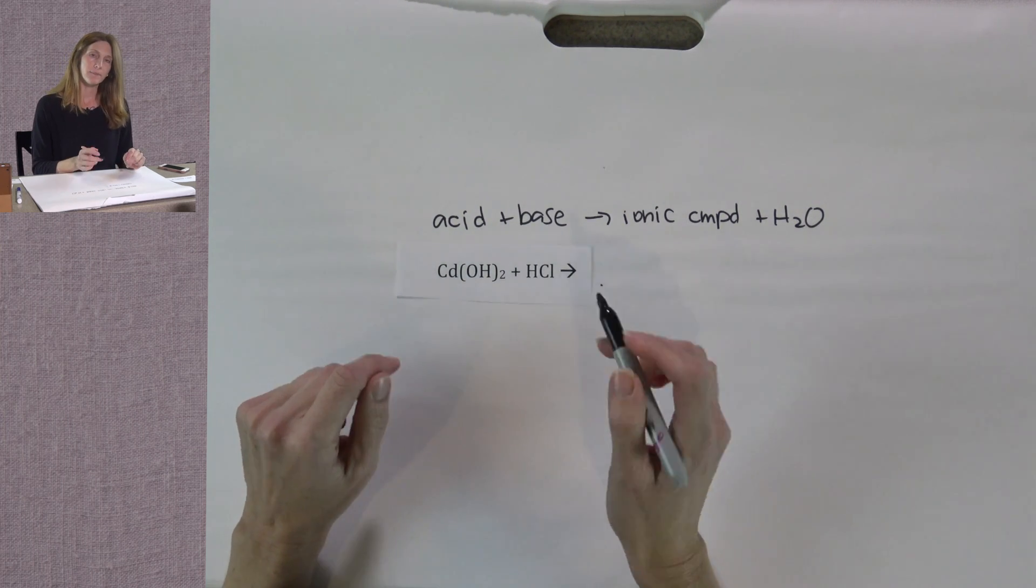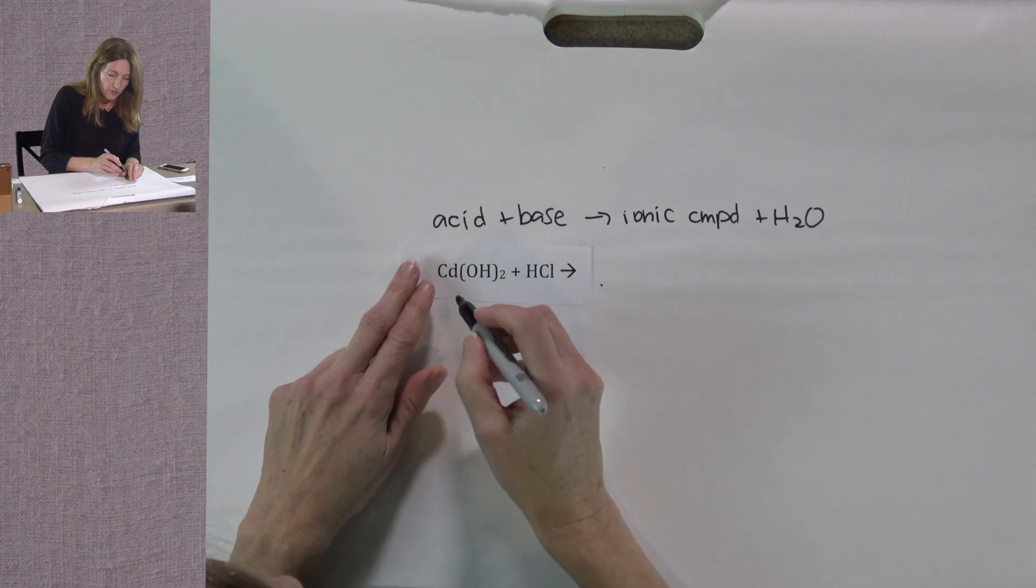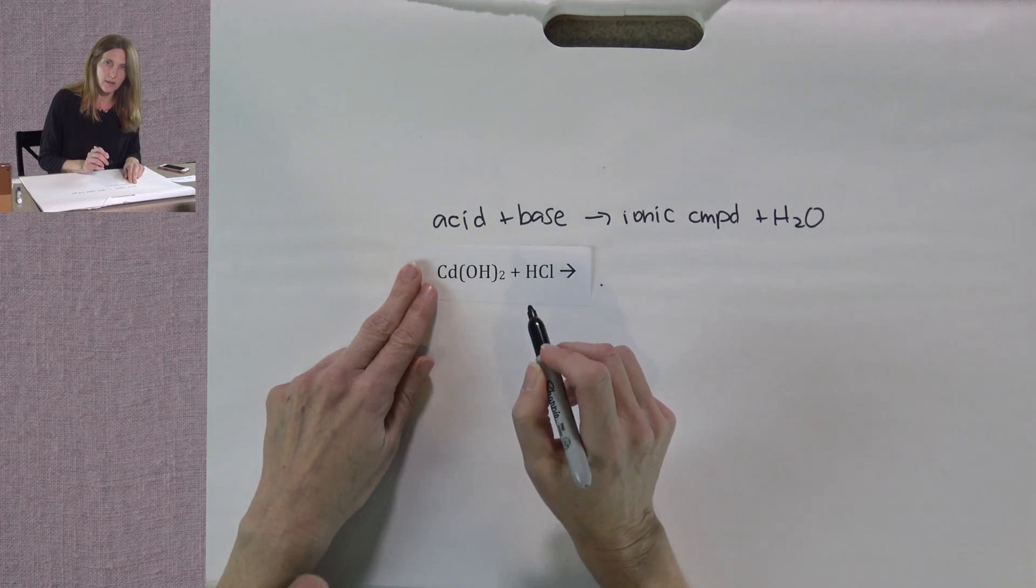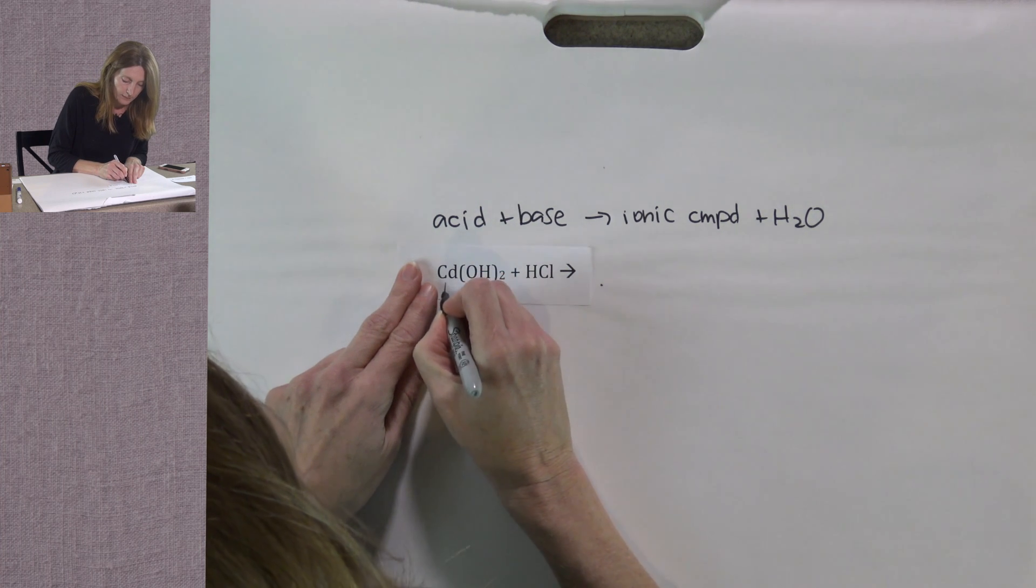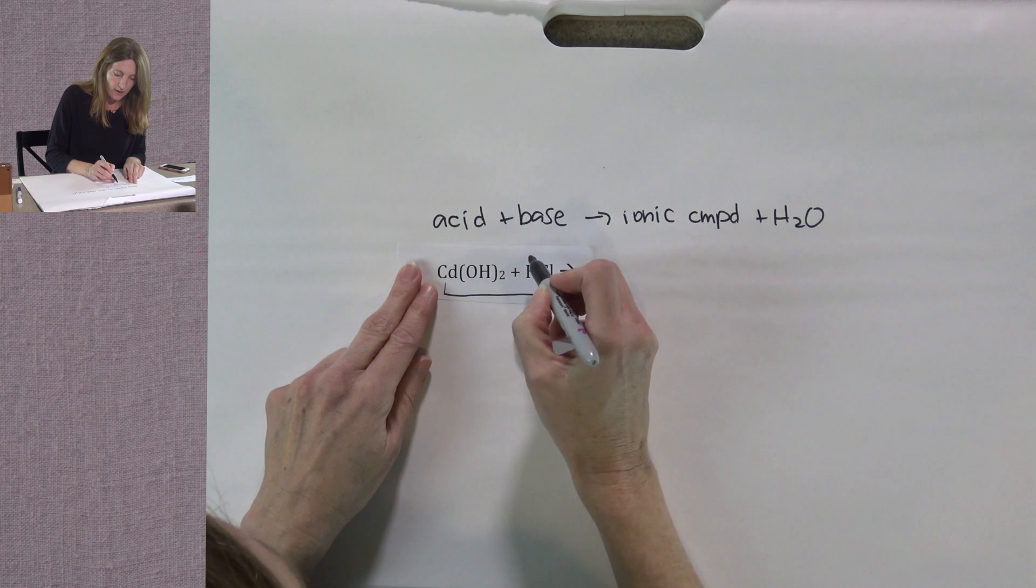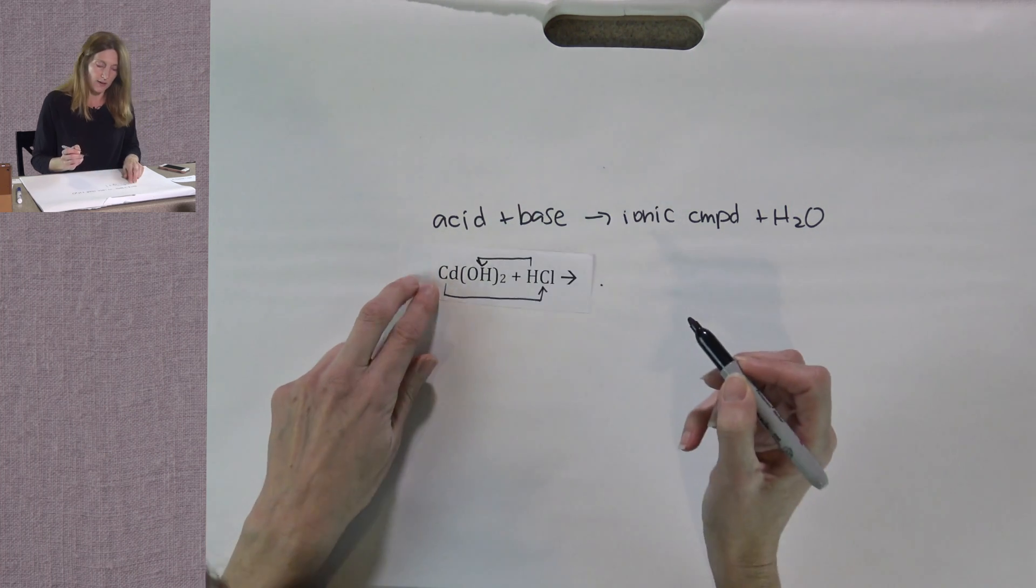Again, acid base reactions are double displacement reactions. That means that the cations and the anions in the reactants will switch partners. So cadmium ion will bond with the chloride ion and the hydrogen ion will bond with the hydroxide ion.